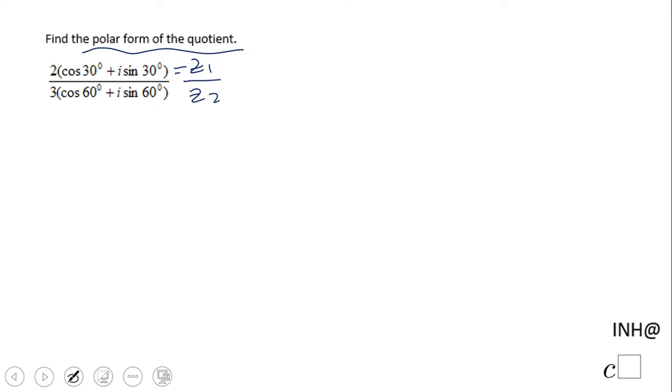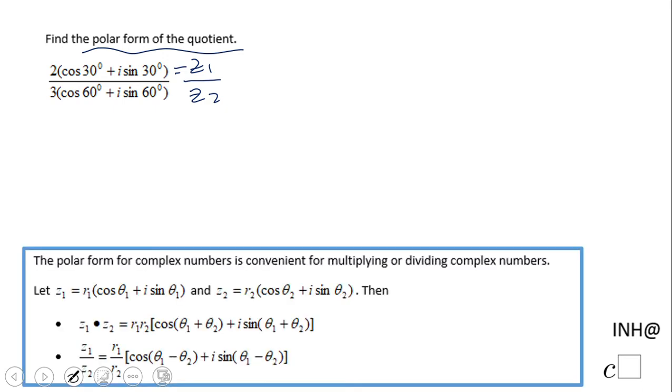The polar form is convenient for dividing complex numbers. Down here, you'll notice there's a formula for dividing complex numbers. Let's follow that formula which says we're going to do a quotient of the r's.